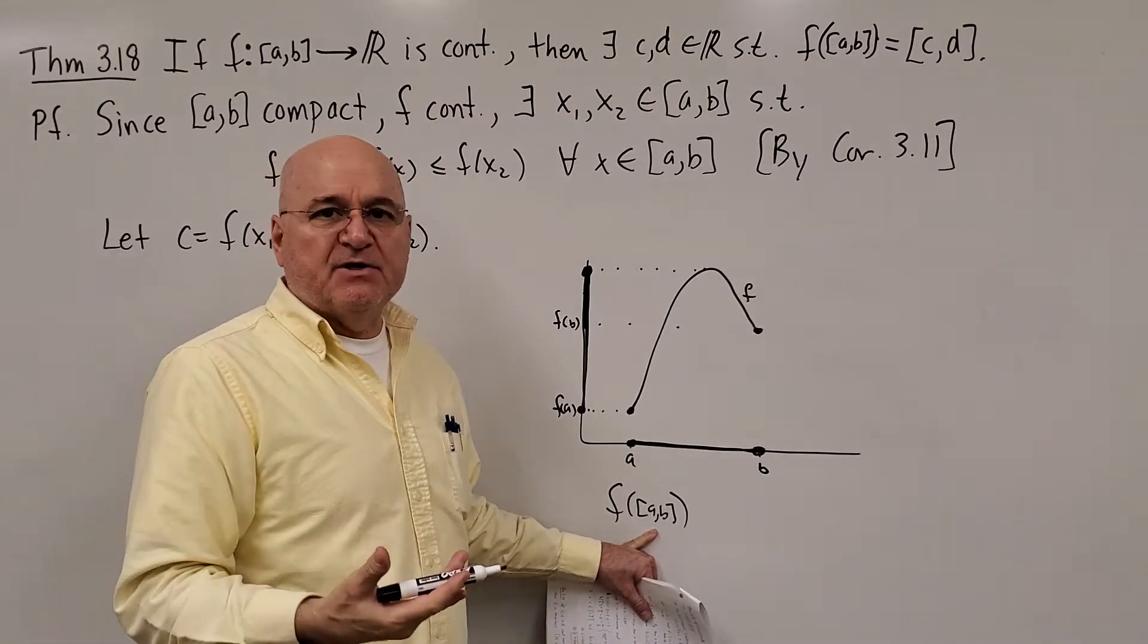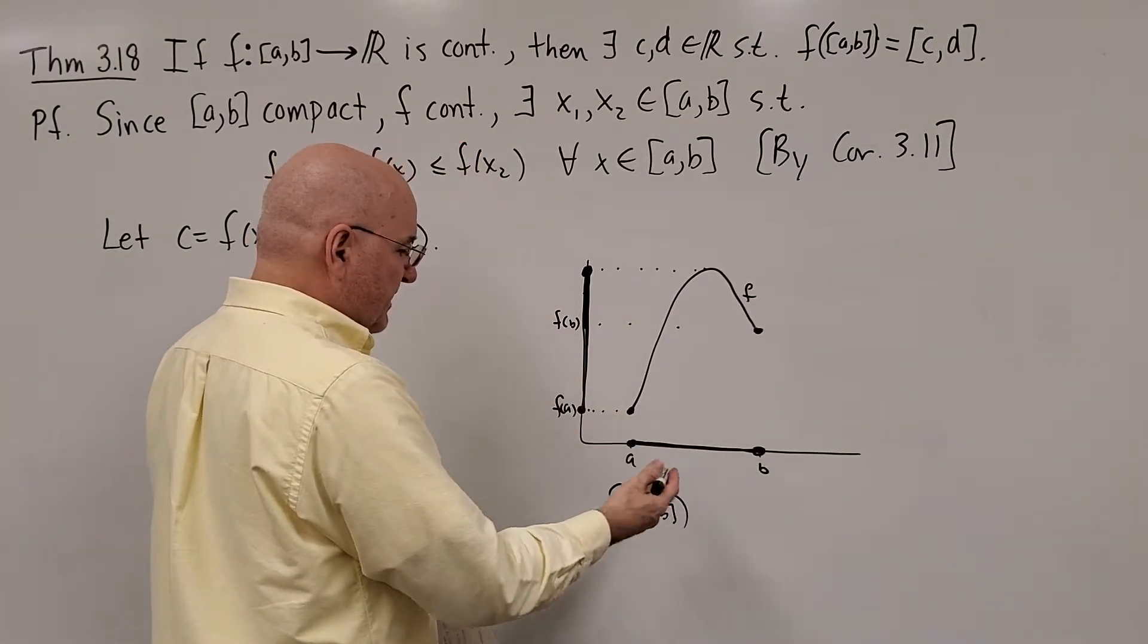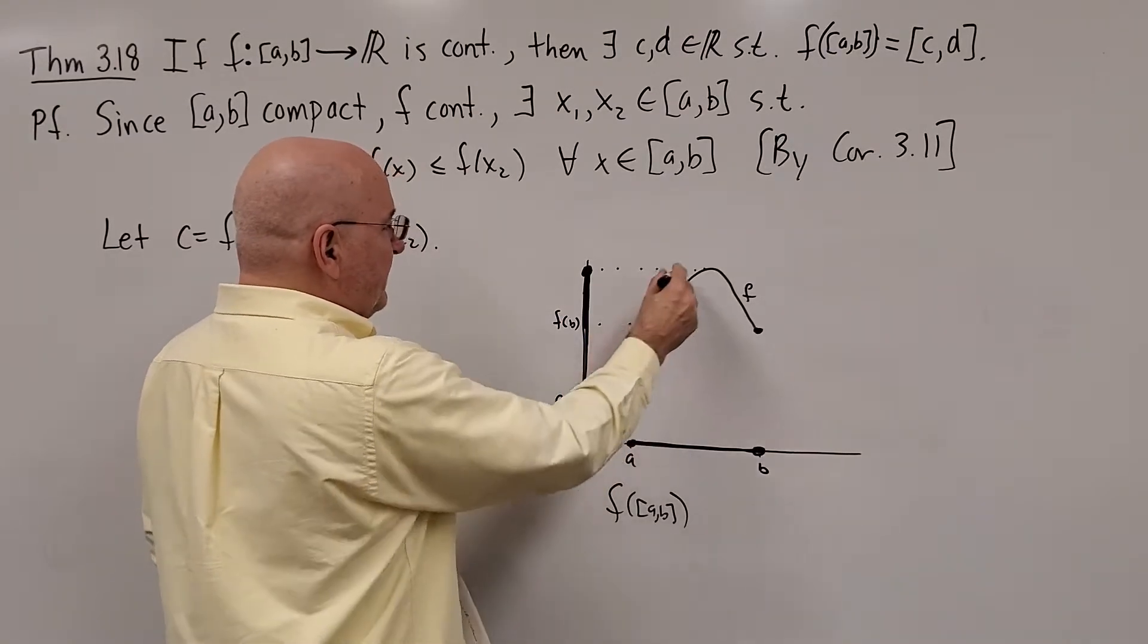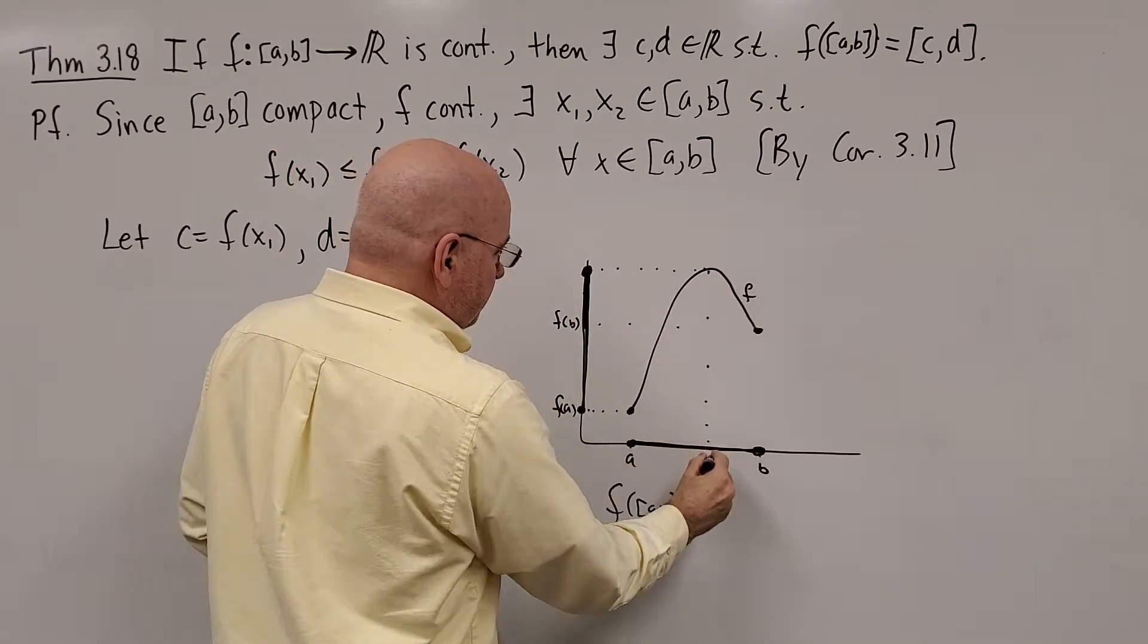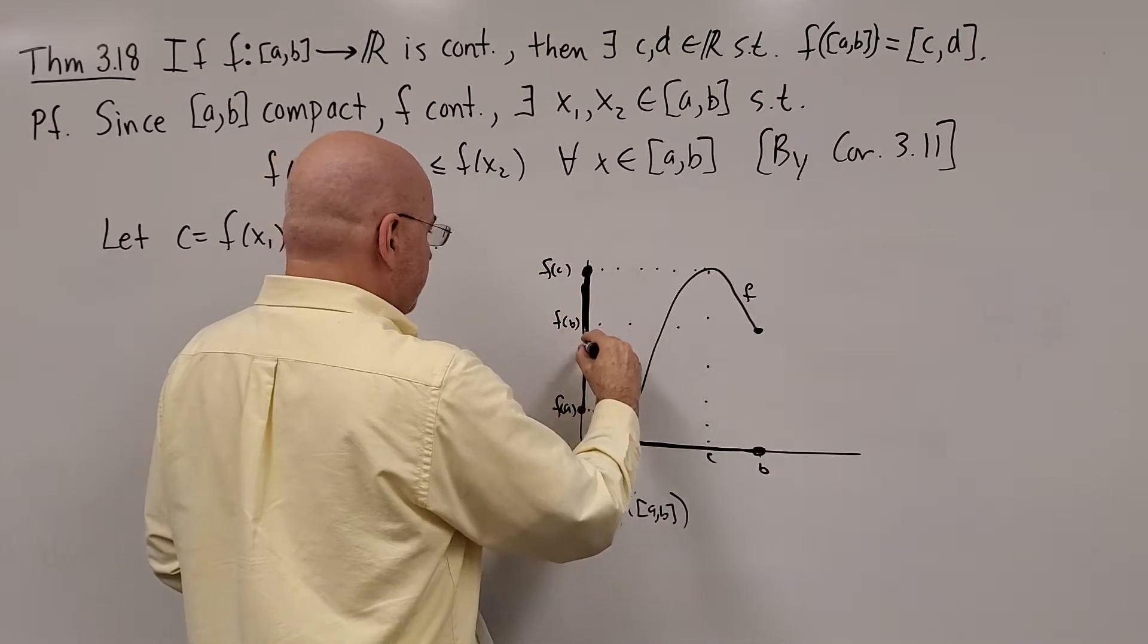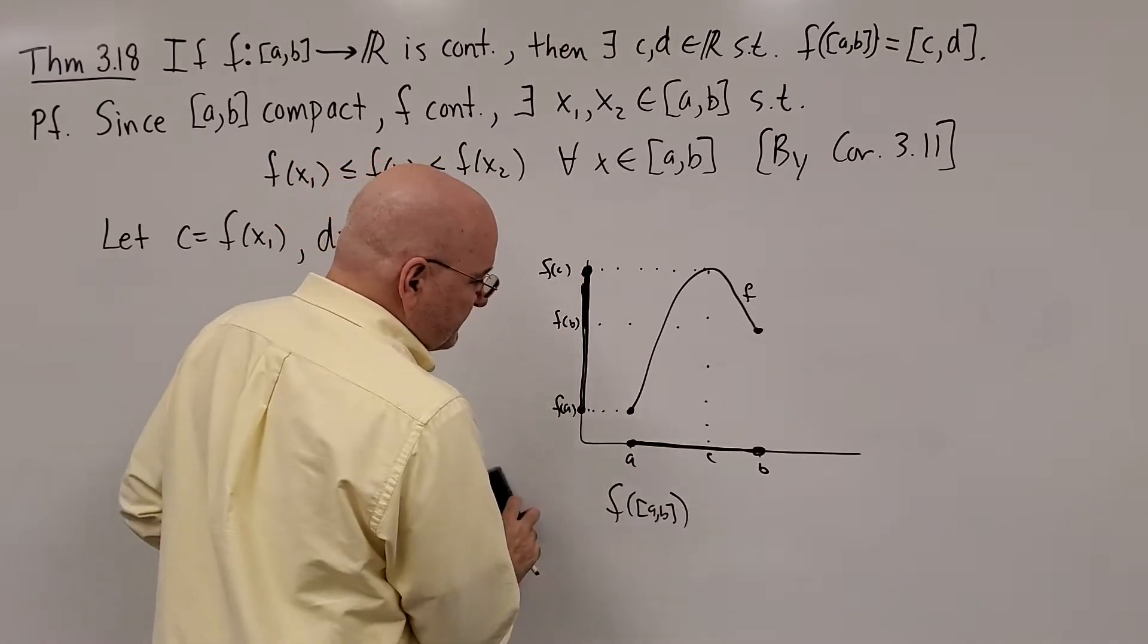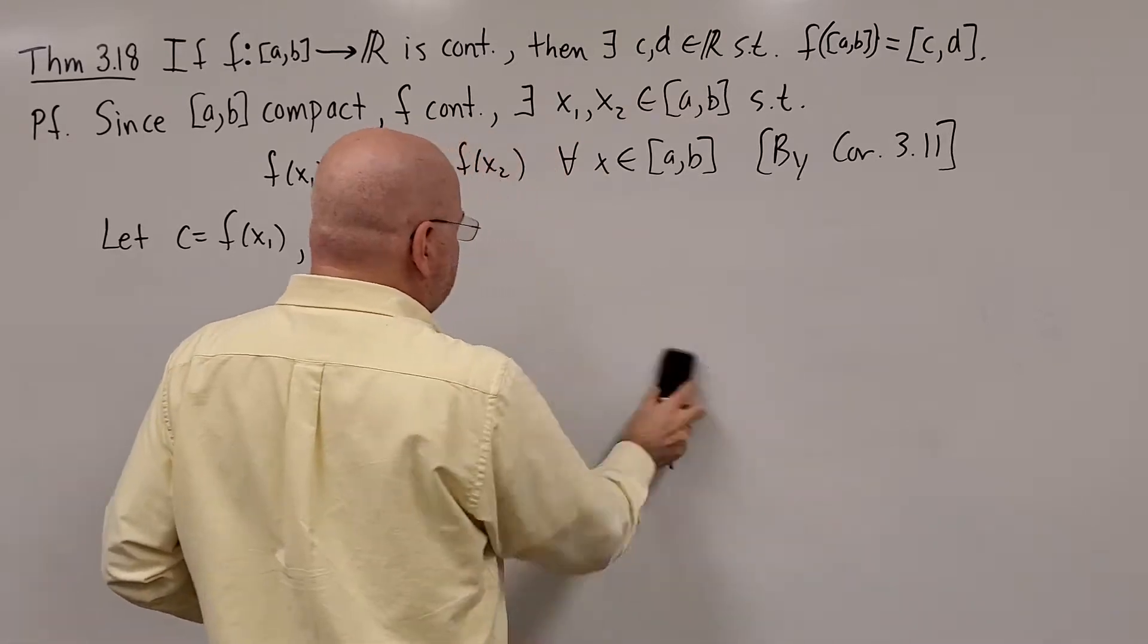So the image of A to B, or the image of F, is the closed interval from whatever F of A is on this graph to whatever this is, maybe C and F of C. Closed and bounded. So now let's prove that.